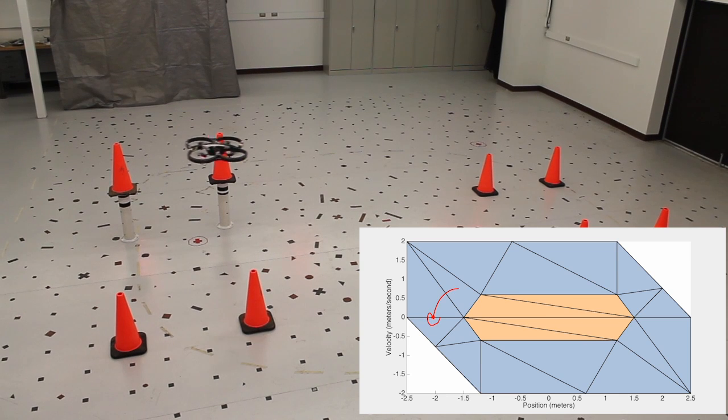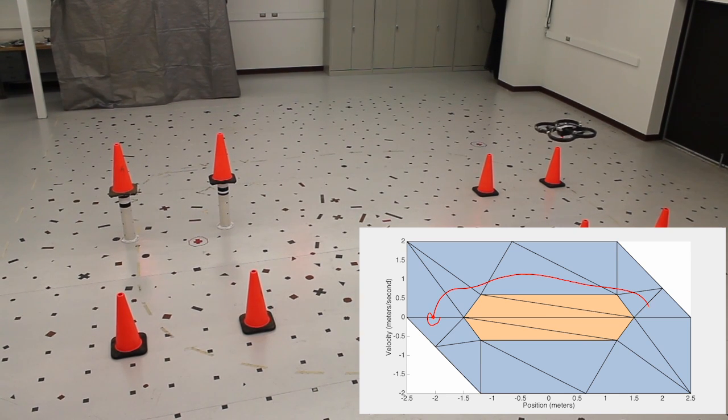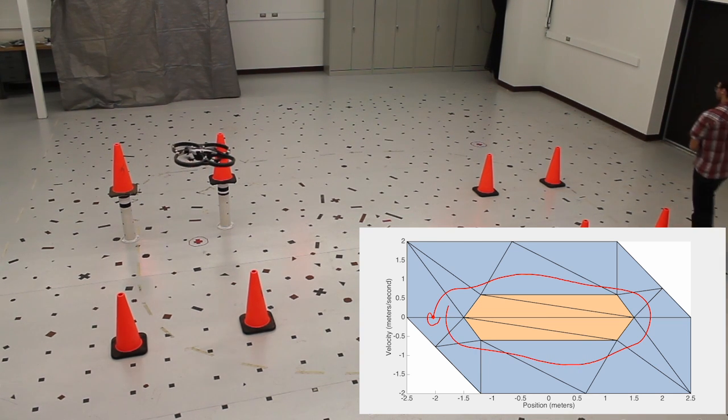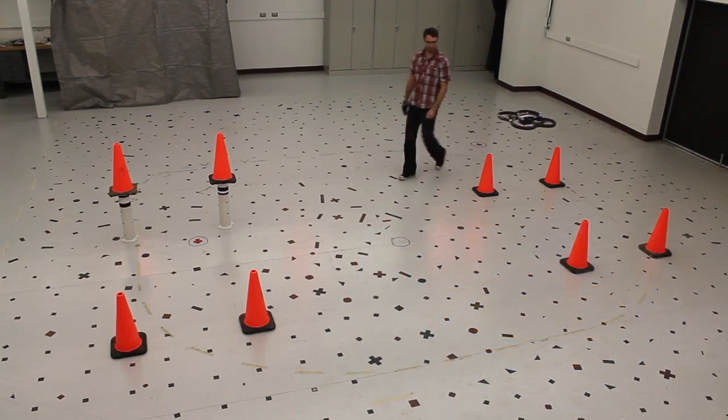Instead, we employ a hybrid control design on the position velocity state space. For the side-to-side motion, the state must evolve within the shaded blue region shown in the plot, where we have defined separate affine feedback controllers for each triangle.